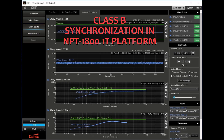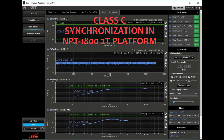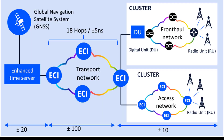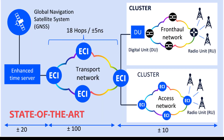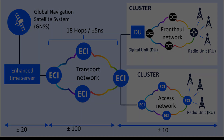The first screen capture demonstrates the current Class B synchronization support in the NPT1800-1T platform. The second screen capture demonstrates Class C support in the NPT1800-2T platform. The ECI solution is non-blocking, cost-optimized, state-of-the-art, and future-proof ready from day one for any 5G network architecture.